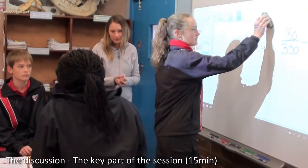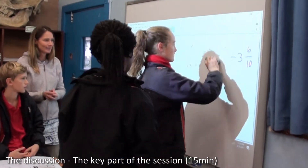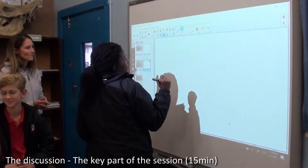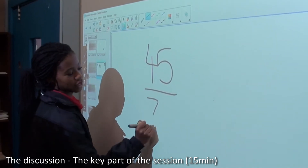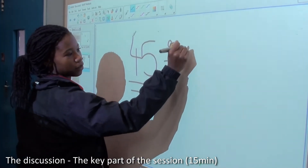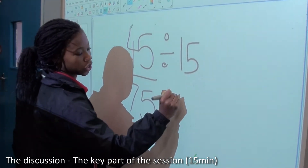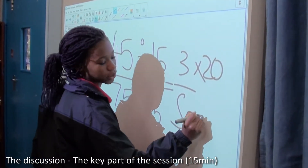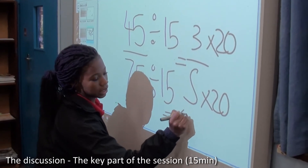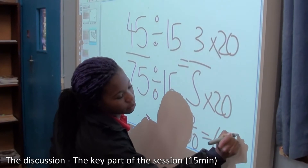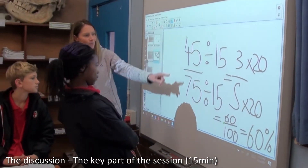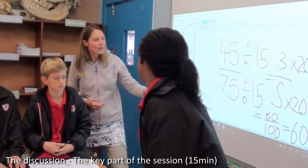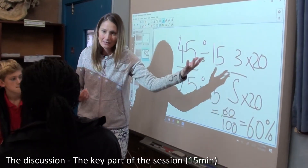Amy, you had a very interesting way of converting this mark into a percent. Can you come and show us what you did? So I went 45 over 75, and I divided both by 15, which gave me 3 over 5. Then I times the top by 20 and the bottom by 20, which equals 60 over 100, which was 60%. Amy, have you changed the value of this fraction by dividing the numerator and denominator by 15? No. You've just simplified it, and you found a nice easy number that works well with 100. All you had to do was multiply it by 20.